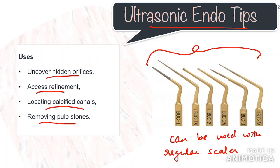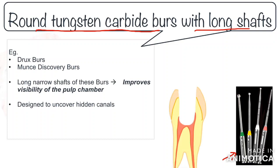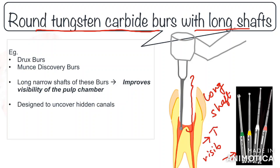To uncover hidden canals, we also have tungsten carbide round burrs with long shafts, such as Munce discovery burrs or Drews burrs. The long narrow shafts of these burrs move the bulky head of the handpiece further away from the occlusal table and thus do not block our view, providing excellent visibility beyond the head of the handpiece and a better view of the pulp chamber. These burrs are also used to remove restorative materials and dentine, including the overlying roof of the pulp chamber.